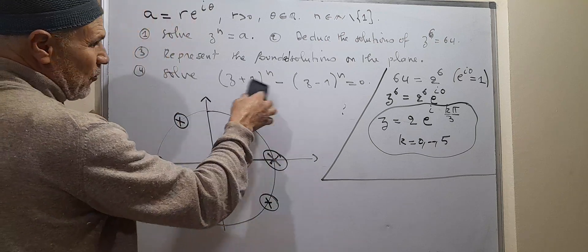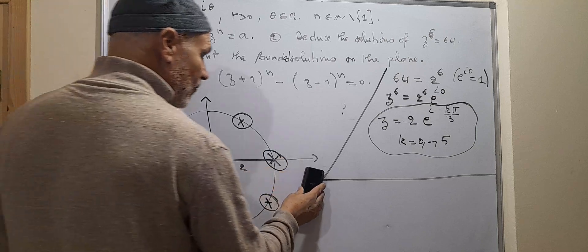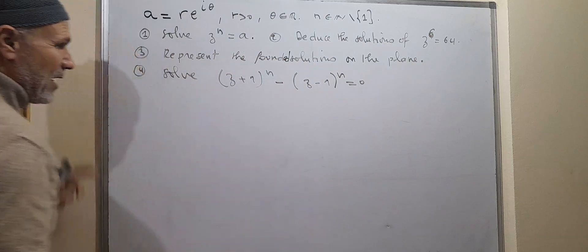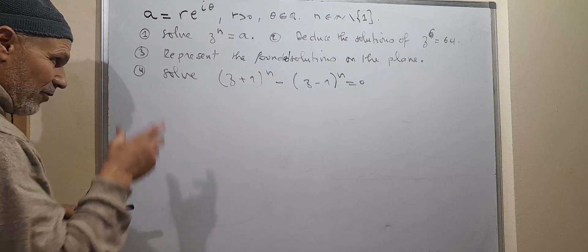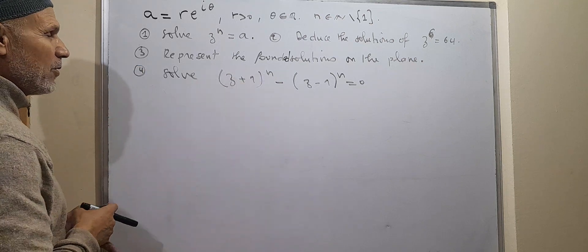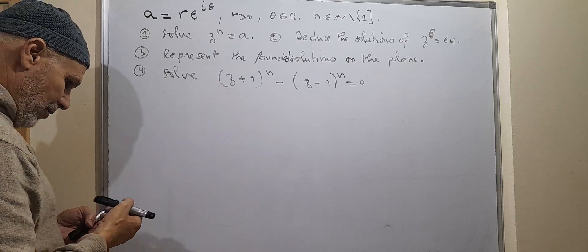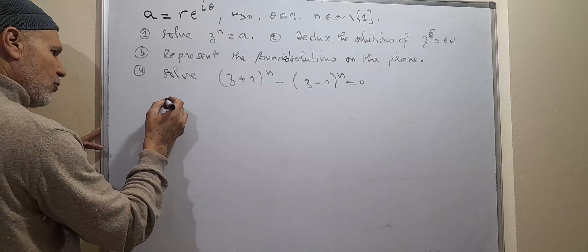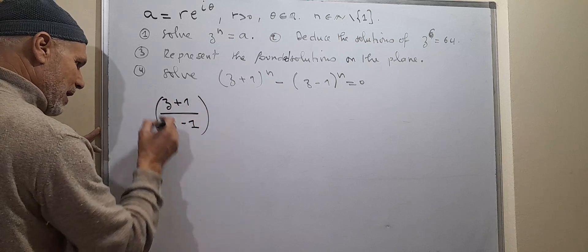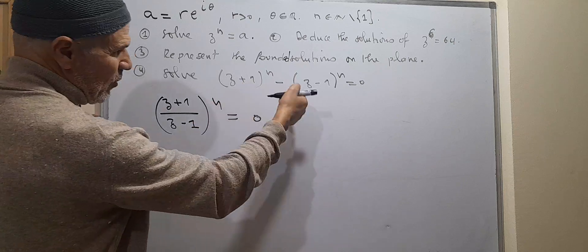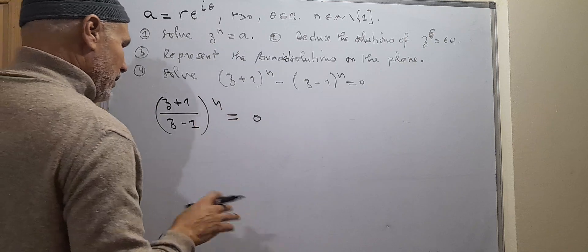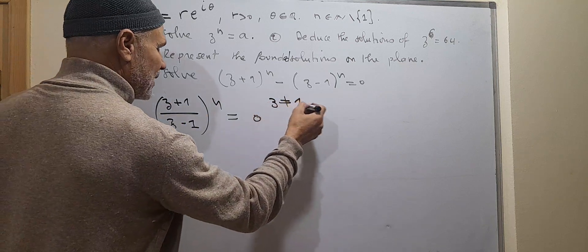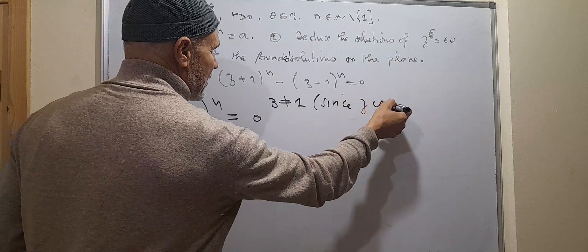The next question asks us to solve a related equation. We can use the result of the first question, among other approaches. One approach: we note the modulus equals 1, so z is on the unit circle. We transform the equation to (z+1)^n = (z−1)^n, noting that z = 1 is not a solution, so we may assume z ≠ 1.